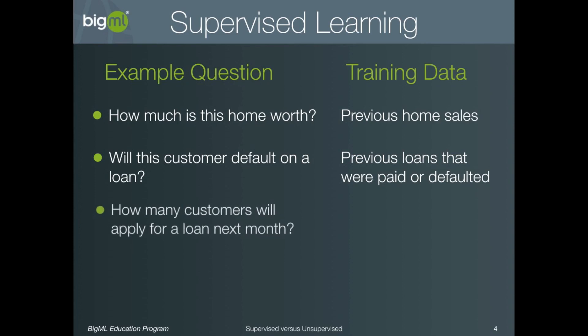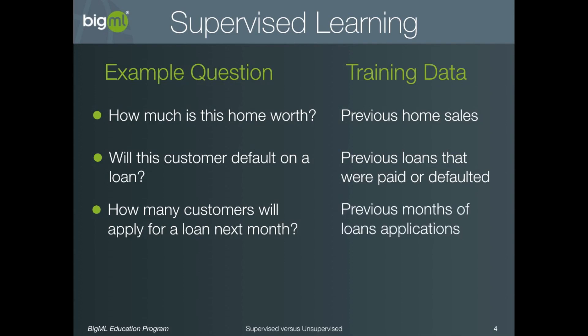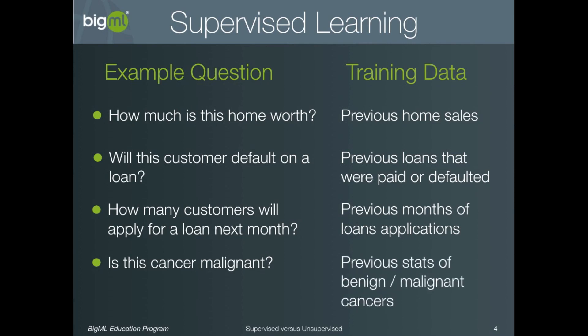Sticking with the loan idea, we could also ask how many customers will apply for a loan next month. In this case, we would need to train the model with examples of previous months of loan applications. And finally, we could try to build a model that answers the question: is this cancer malignant? Here we would train the model using measurements and statistics for previous cancers that have been labeled as benign or malignant.